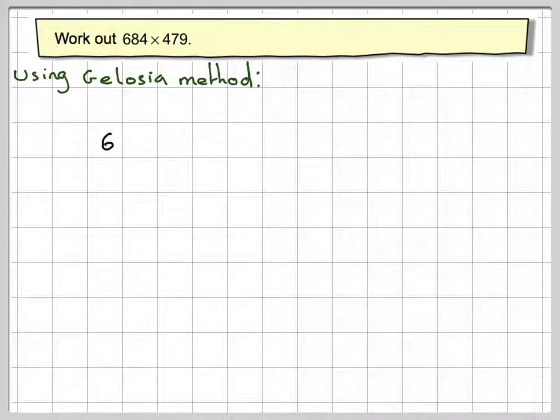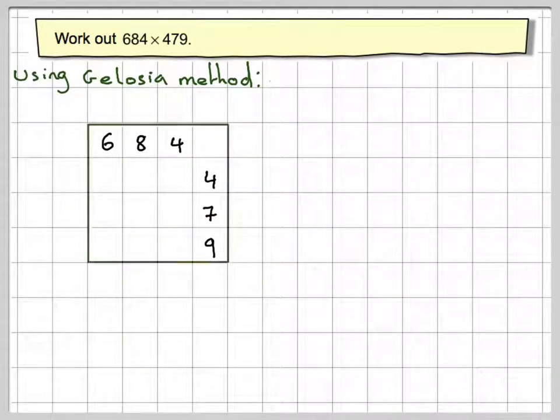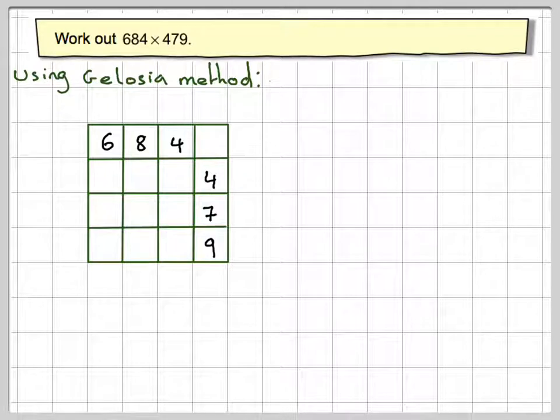So in this method you do the following. You write down the number 684, the first number, and then down here you write down 479, making sure you keep each thing in the squares nicely. Draw a square around them, draw that line in and that line, and then draw in the grids that way. So you've sort of got a grid. Now across the grid, you now need to draw lines across the diagonal, like this.